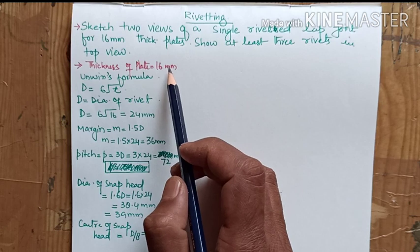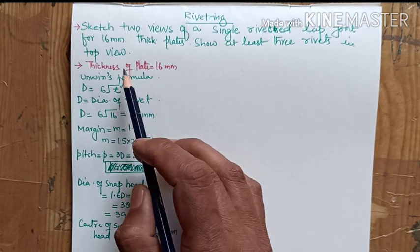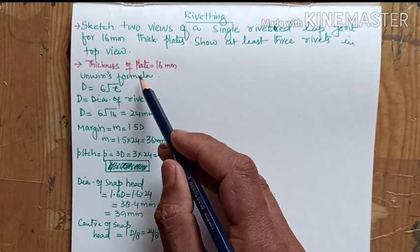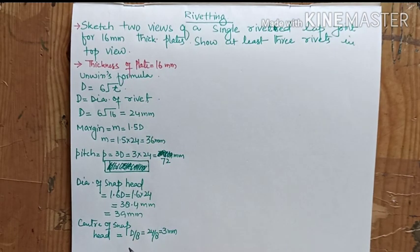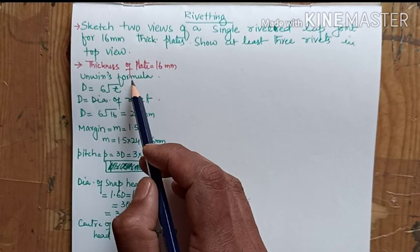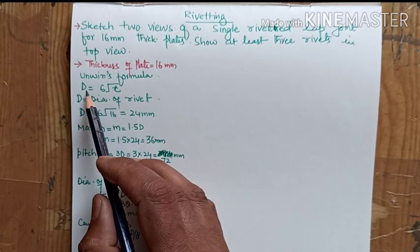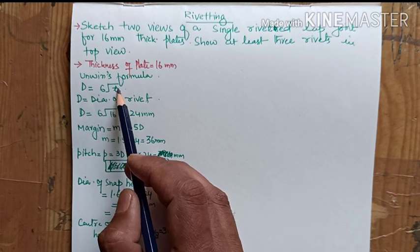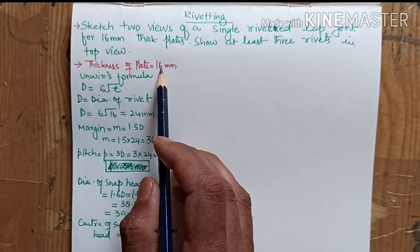So thickness is 16mm given. With the help of thickness we can find out the other parameters. We have the formula which is D equals 6 root T, and this T is the thickness of the plate.